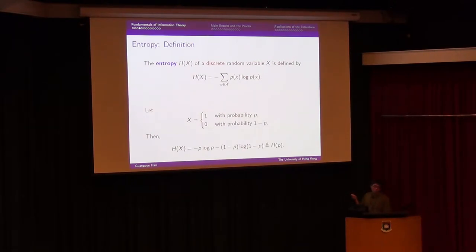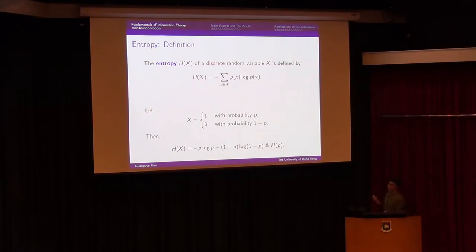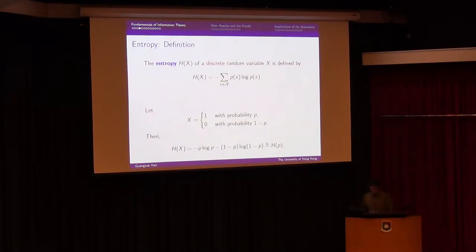When p equals zero or one, the random variable is not random at all — it's deterministic. It doesn't have any randomness, so the entropy equals zero, which is the smallest possible value.